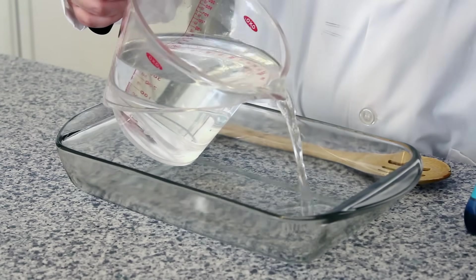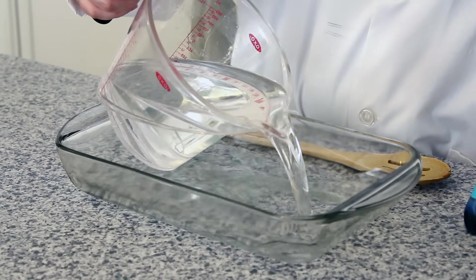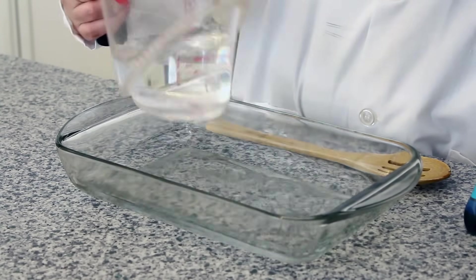So what we're going to do first is fill our shallow dish with an inch or two of water. And then we're just going to add some food coloring to make it easier to see.